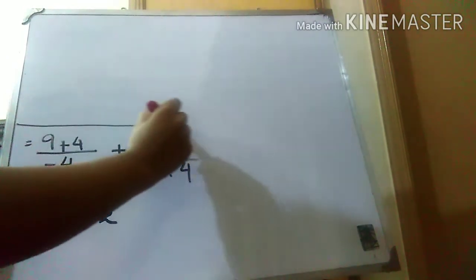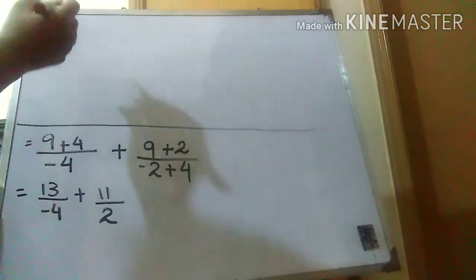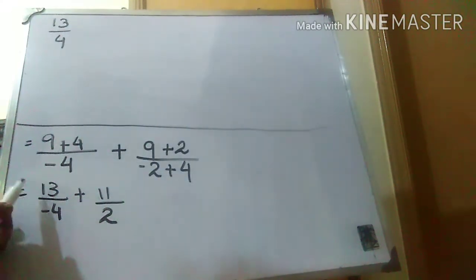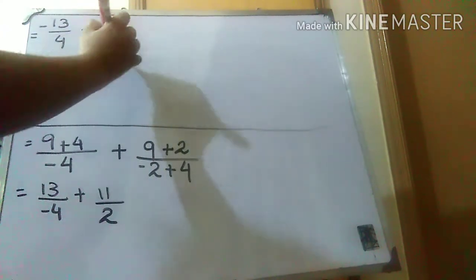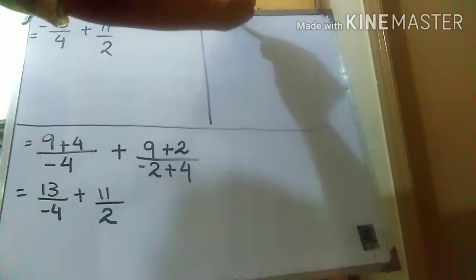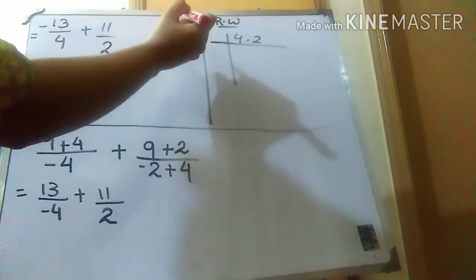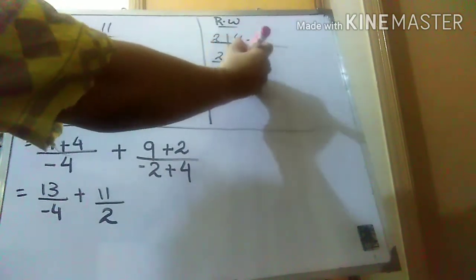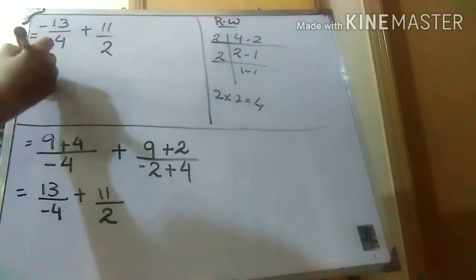I'm drawing a line to separate the work. The fractions are 13 over 4 and 11 over 2. When dividing signs, remember the same rule as multiplication: plus divided by minus is minus. So we have minus 13 over 4 plus 11 over 2. Now I'll take the LCM of the denominators 4 and 2. In the rough column: 2 goes into 4 twice and into 2 once, so the LCM is 4.